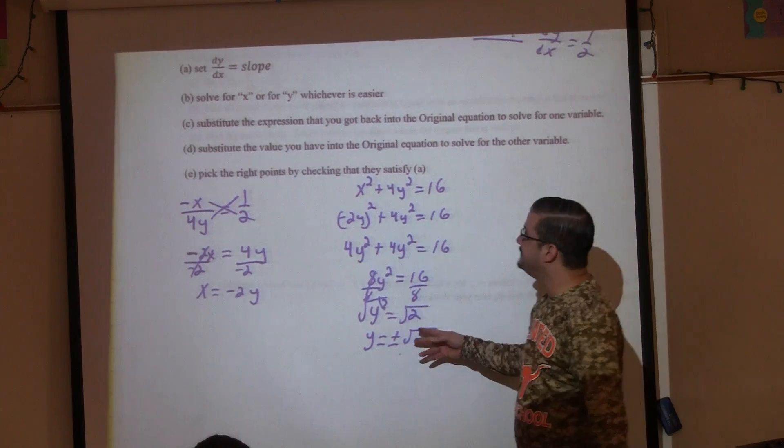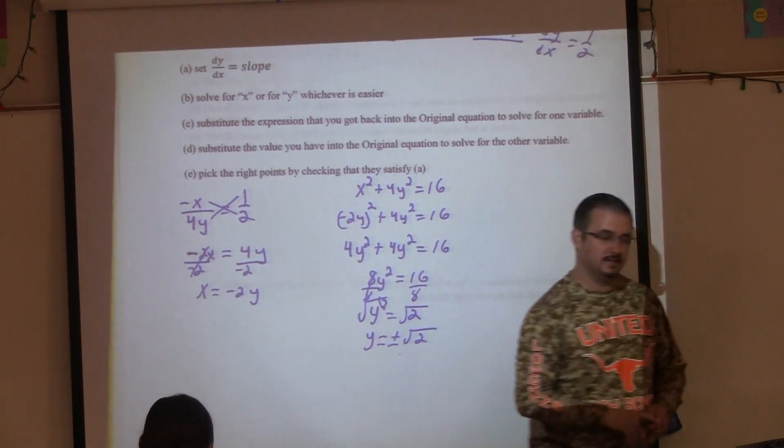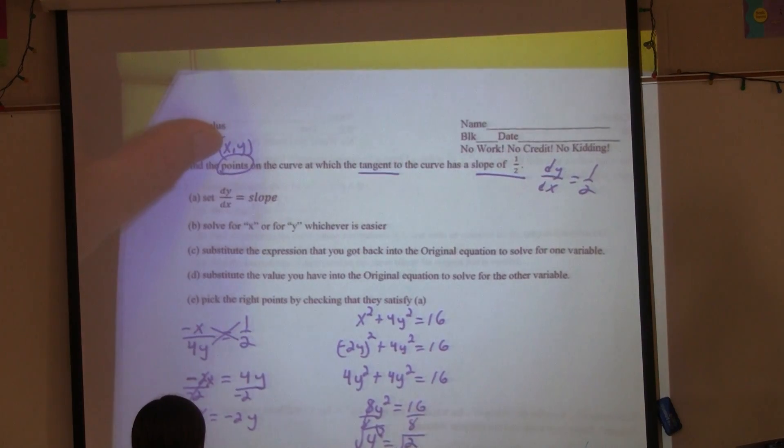Those are only my Y's. I need my X and my Y. So how can I get the X's if I know the Y's?